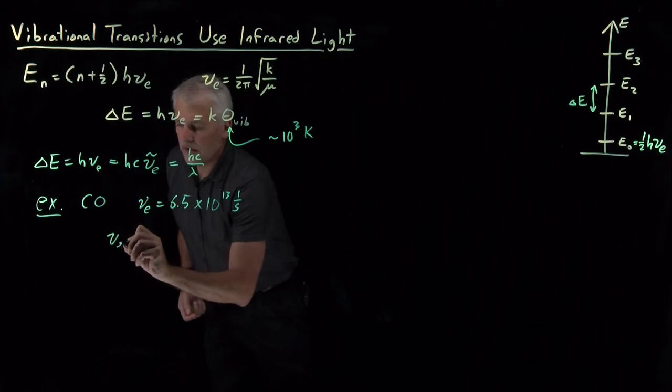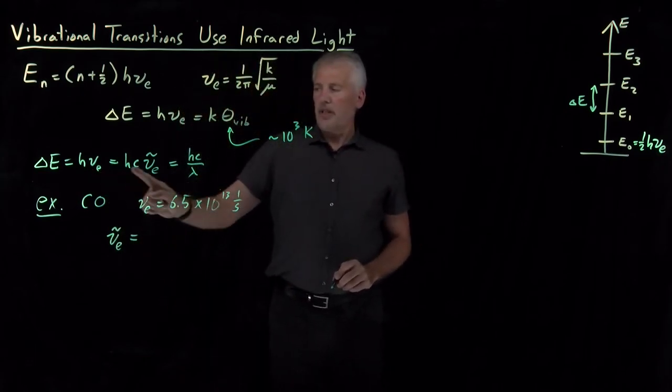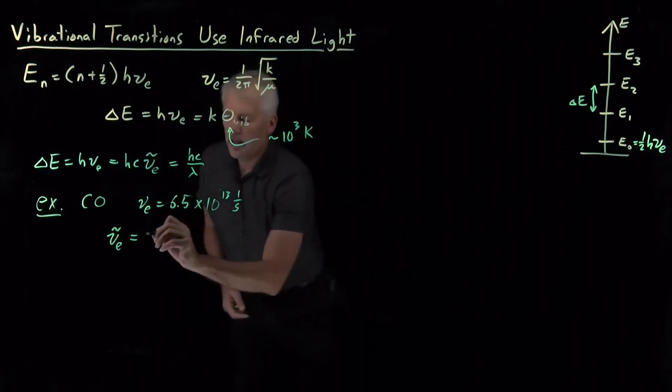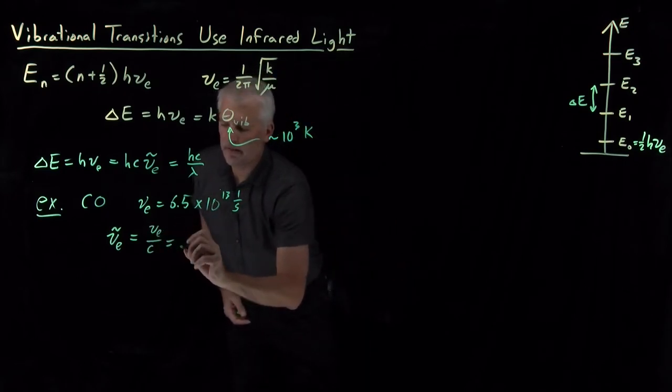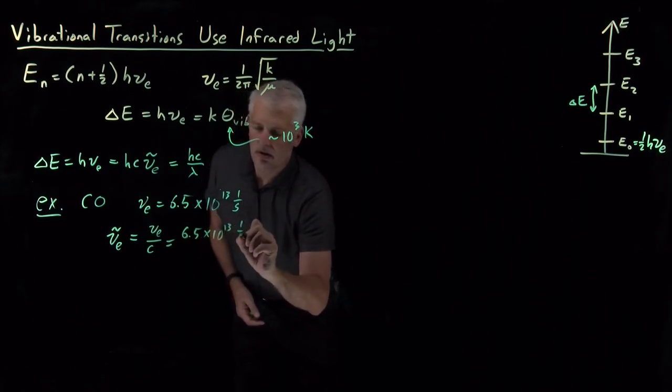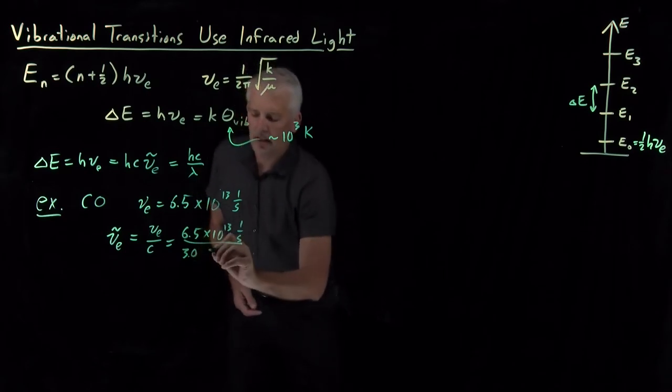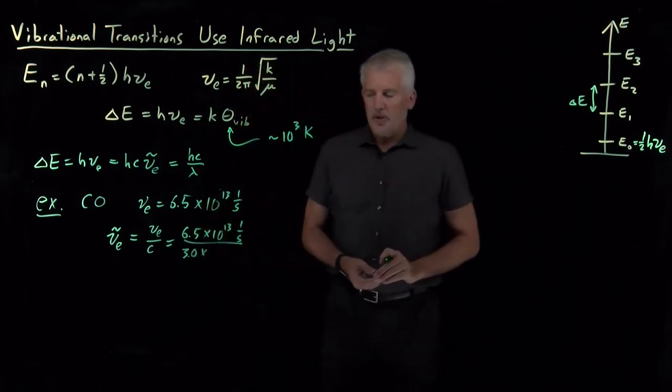So, if the frequency is C times the wavenumber, then the wavenumber is frequency divided by the speed of light. So, that's relatively straightforward arithmetic. Speed of light is 3 times 10 to the 8th meters per second.